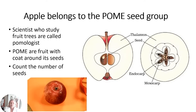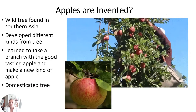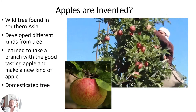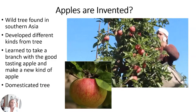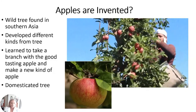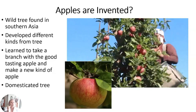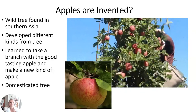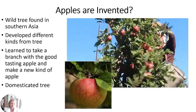Here somebody is picking natural crab apples — he's up on a ladder with a bag, and you can see how much fruit there is. This is the wild tree originally found in southern Asia. We learned to take a branch that had a good-tasting apple and make a new kind — that's where we get our domesticated apple trees and your favorite apple.